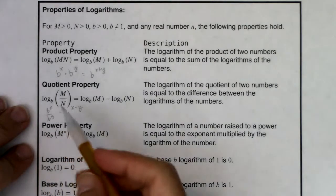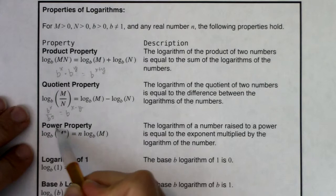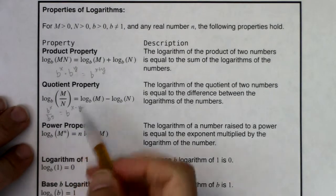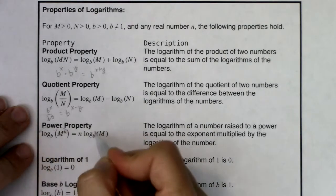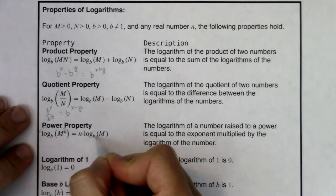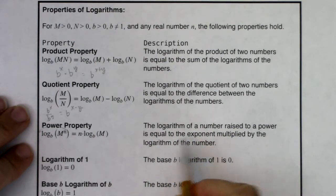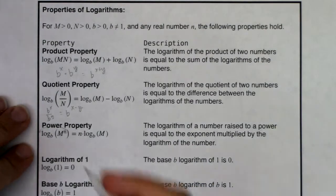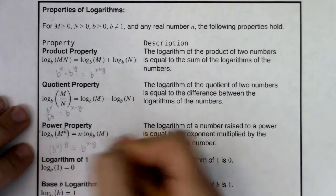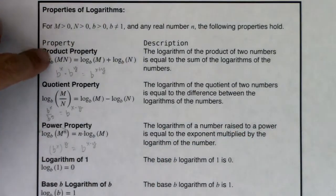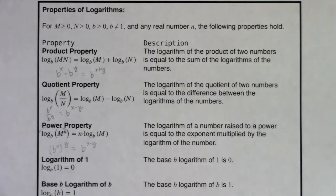We have a third property called the power property. Looking at the argument, it is a power — m is the base, n is the exponent. The power property says if your argument is a power, you can take that exponent and bring it down in front as multiplication, giving n times log base b of m. In other words, the logarithm of a number raised to a power equals the exponent multiplied by the logarithm of the number. This comes from the exponential property where a power raised to a power means you multiply the exponents.